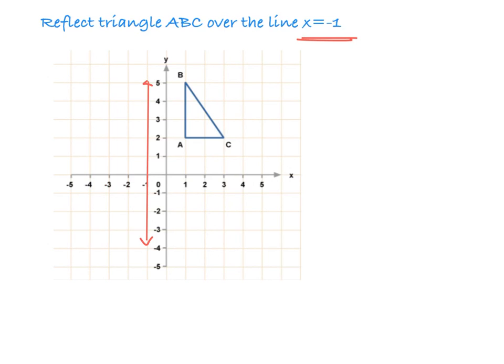So now we just do like we did when we did a reflection over the axes. We just take each of our points and put them at equal distance from that line. So point A was 2 units to the right of the line of reflection. So point A prime has to be 2 units to the left. Point C was 4 units to the right.